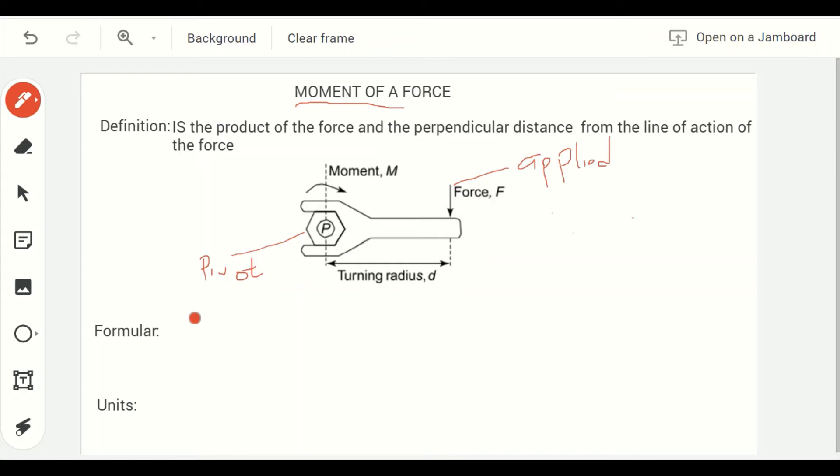The formula for moment of a force is moment equal to force times the distance. M = F × d. This is the formula for calculating moment of a force.